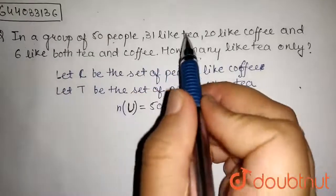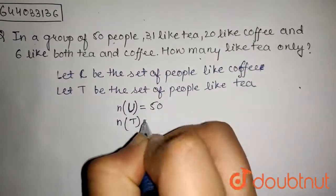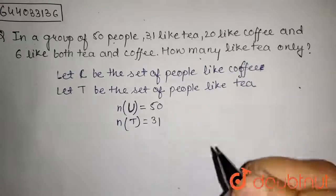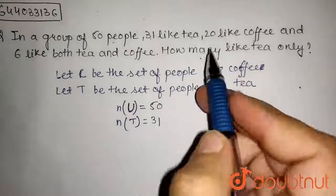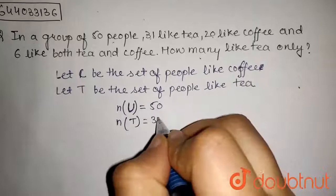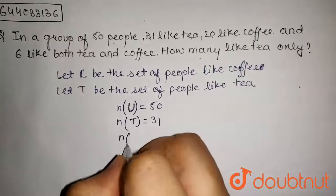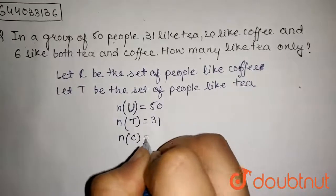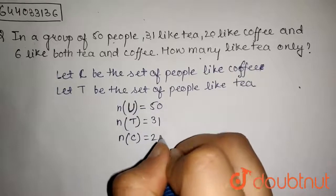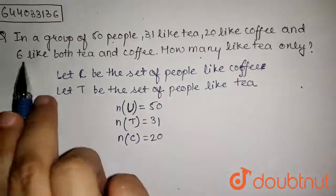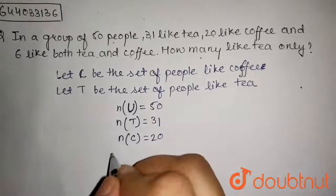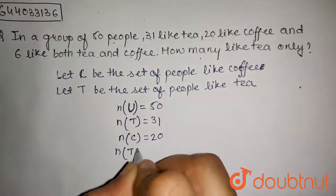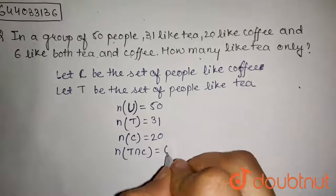31 like tea, that is, number of elements in set T is 31. 20 like coffee, so number of elements in set C is 20. And 6 like both tea and coffee, so number of elements in T intersection C is 6.